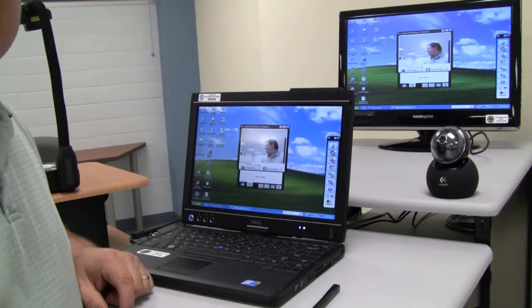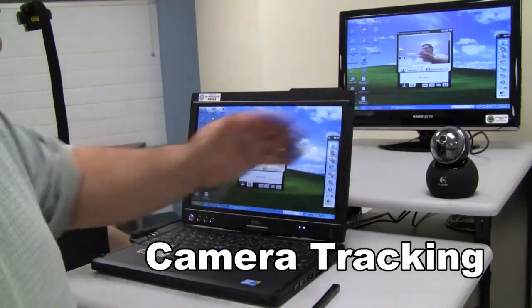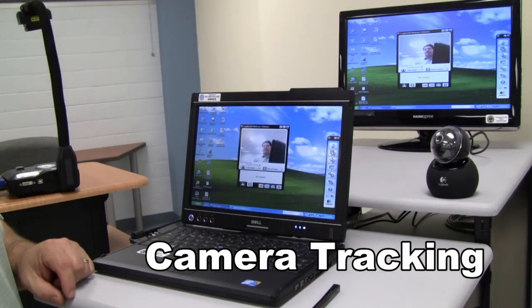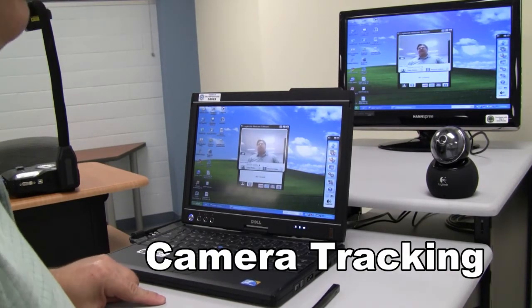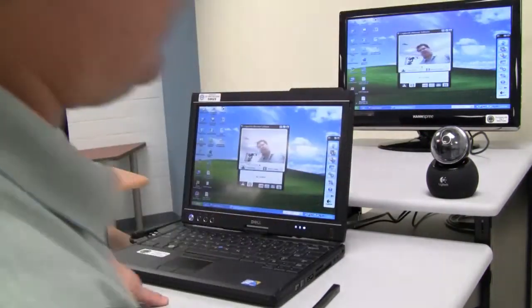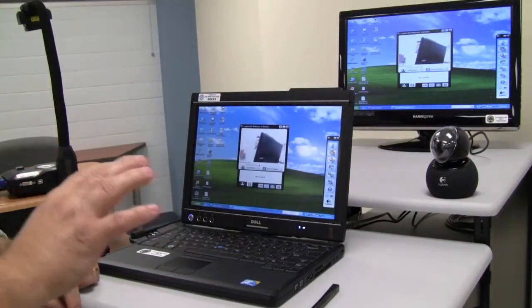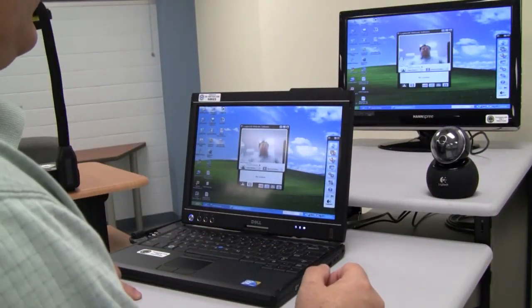Now what I've done is I have activated the camera here and the camera does follow my movements. If I move over here, the camera will follow me as much as I move. So it does adjust to where I'm at.